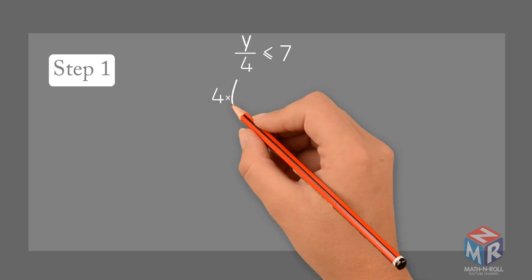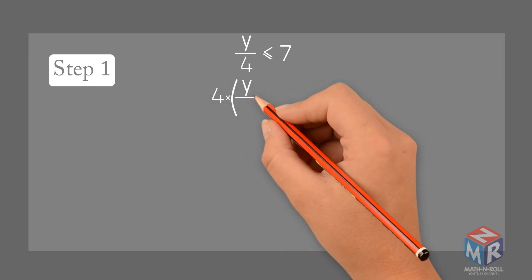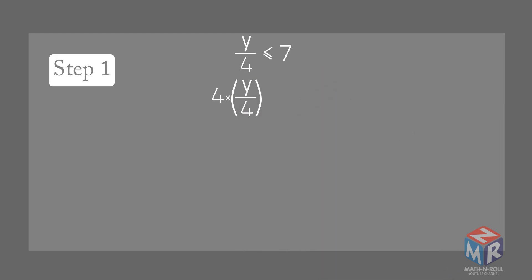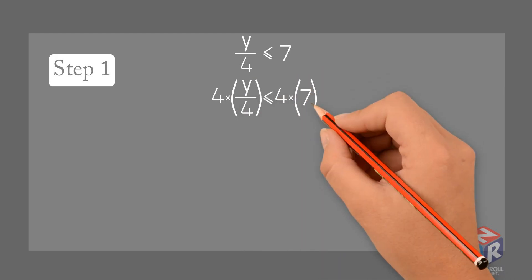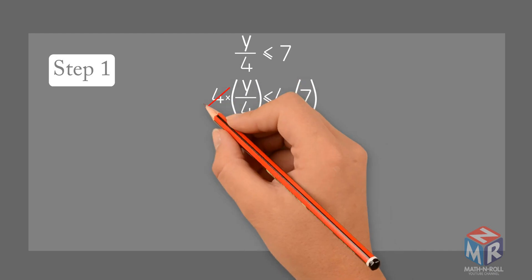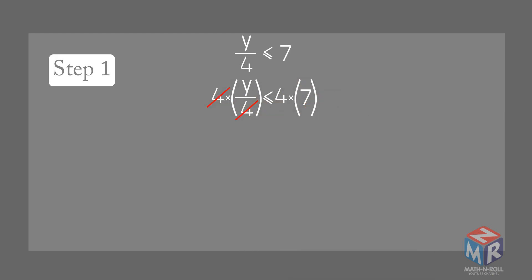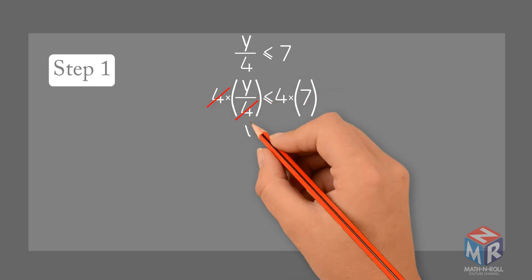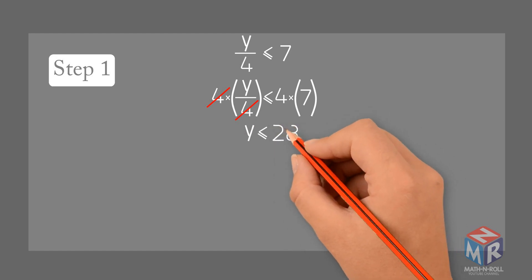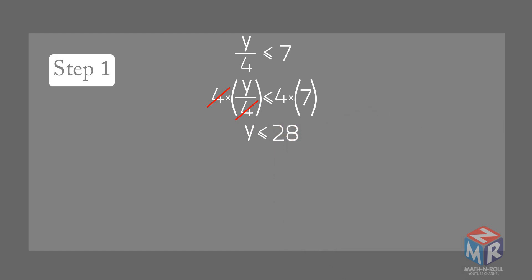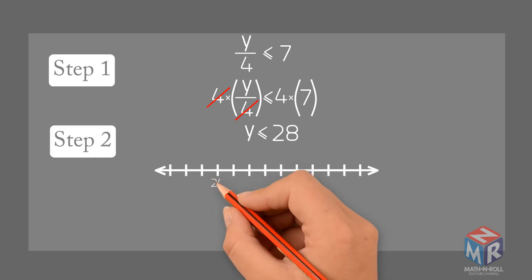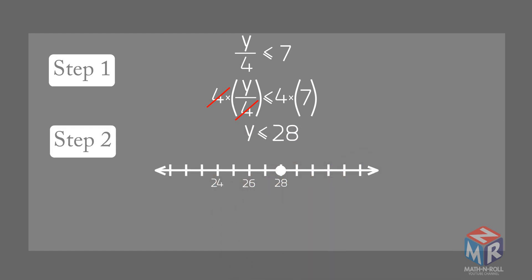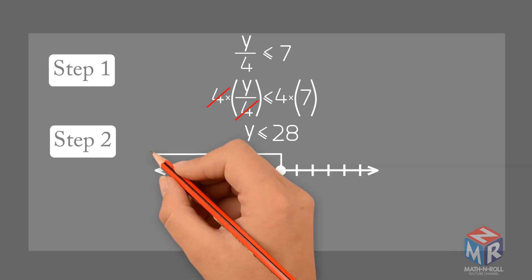Multiply both sides by 4. Step 2: Graph the solution. Use a closed circle to show that 28 is a solution.